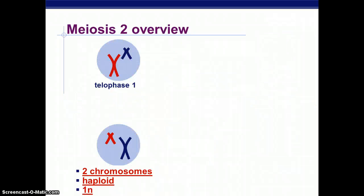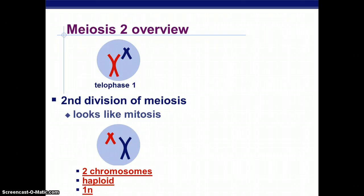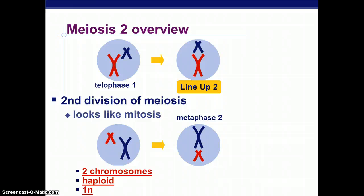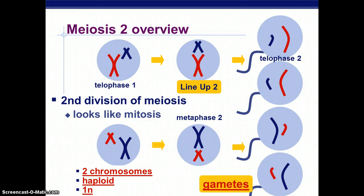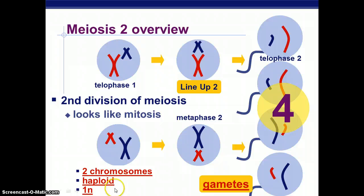So we have to keep going. Each of the cells produced in the first division now undergoes a second division, which looks a lot like mitosis. It again goes through metaphase where chromosomes line up in the middle, then anaphase, and then telophase. These are what can become sperm or egg. Sperm and egg are called gametes, and you end up with four of them. Each one of these has two chromosomes, is haploid, or 1N.